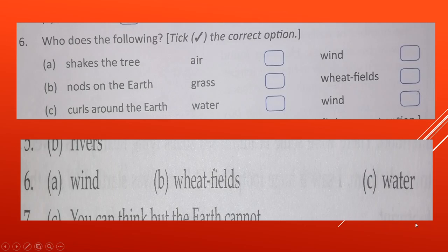Now see this next question. Six. Who does the following? Shakes the tree. Who shakes the tree? Air or wind? So wind. Wind will be the answer here.